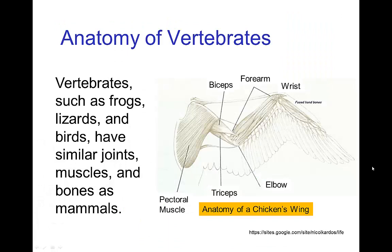And that was just for mammals, but in fact all vertebrates have fairly similar joints, muscles, and bones. Here we have a chicken wing, and you see the wrist and the forearm and the elbow, and so forth.